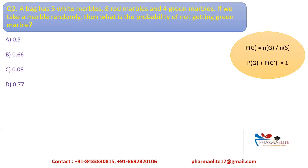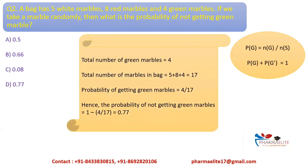The total number of green marbles is 4. The total number of marbles in the bag is 5 + 8 + 4 = 17. The probability of getting a green marble is 4/17. Hence, the probability of not getting a green marble is 1 − 4/17, which is 0.77. The answer is option D, 0.77.